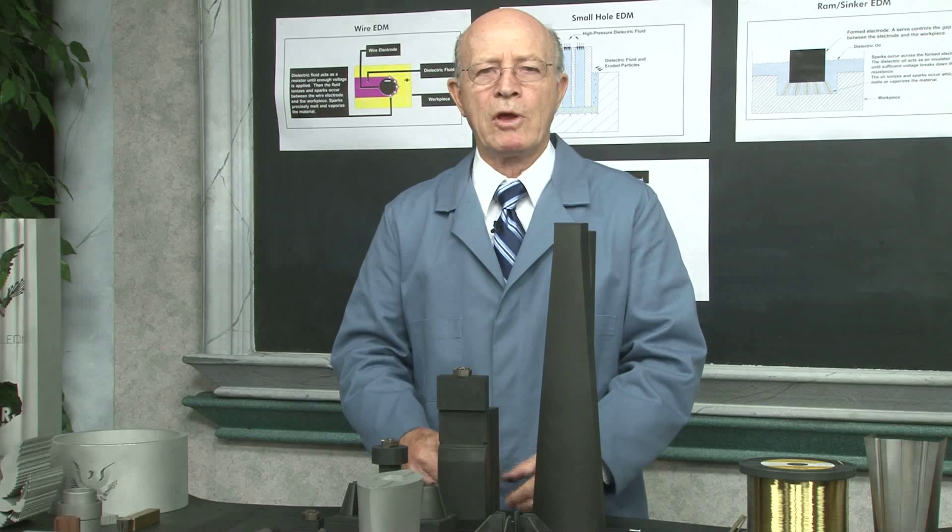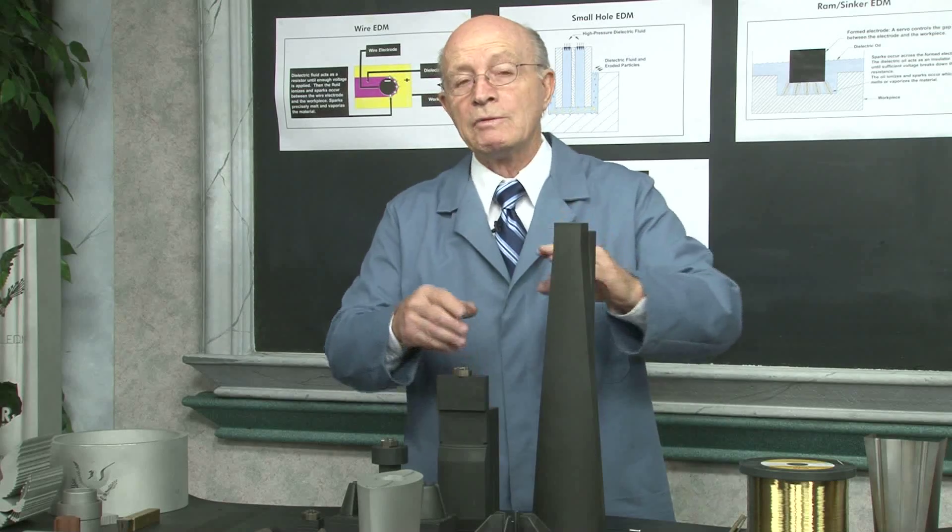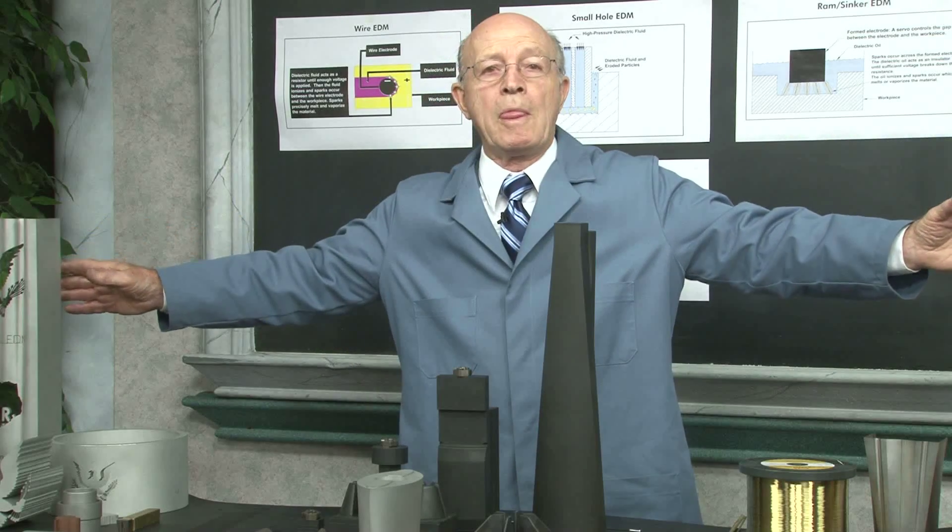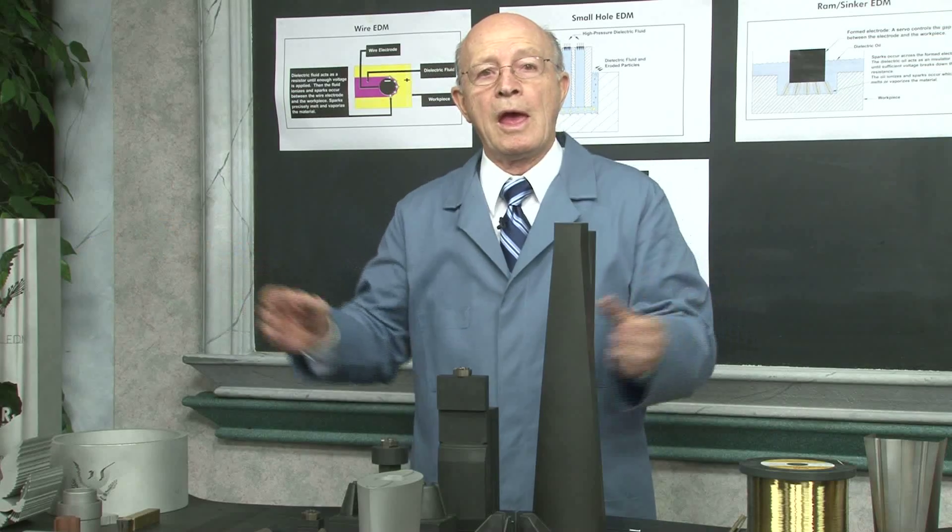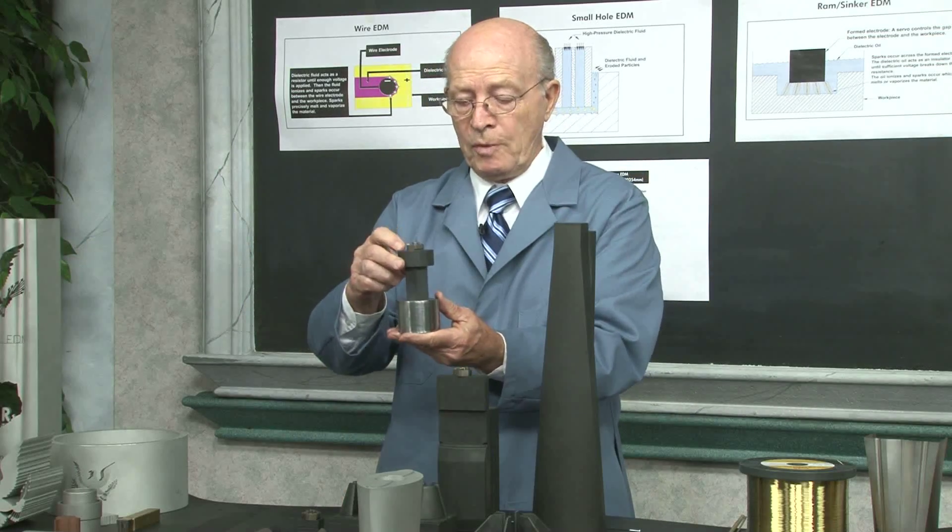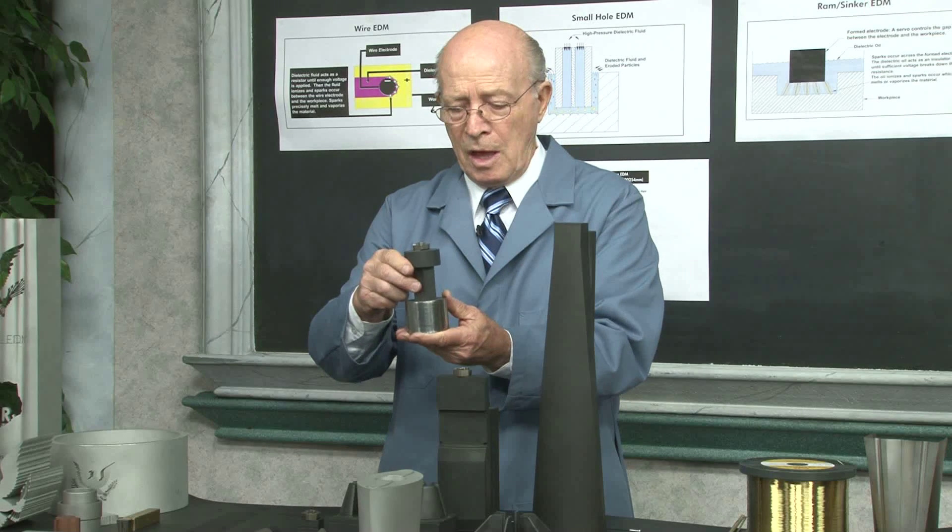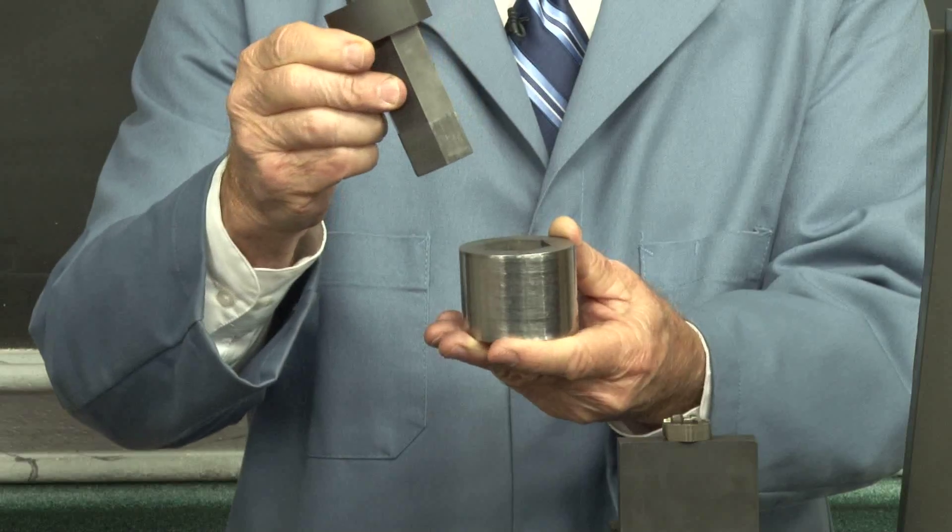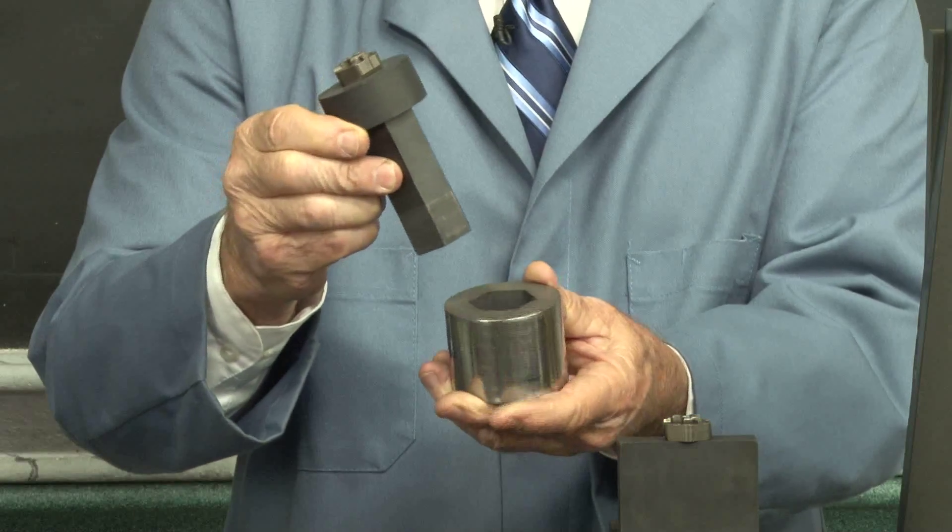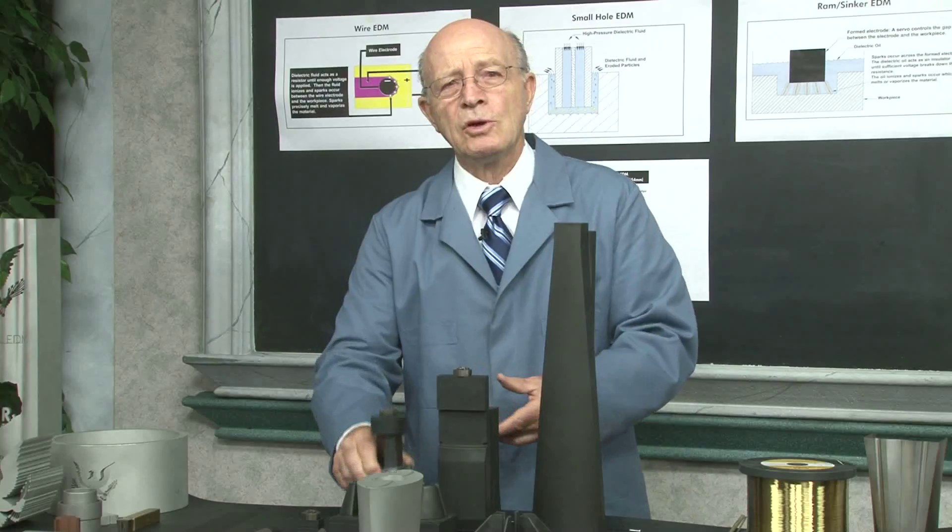Let's examine RAM EDM. I have some graphite electrodes on the table, and here's a tall one. But we have some real tall ones that we have used. And here's an example of a graphite electrode. It's usually used for blind cavities. And this is a hex electrode, it's a blind cavity. Sometimes we go through.